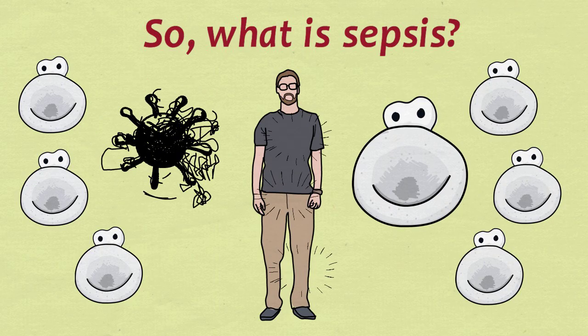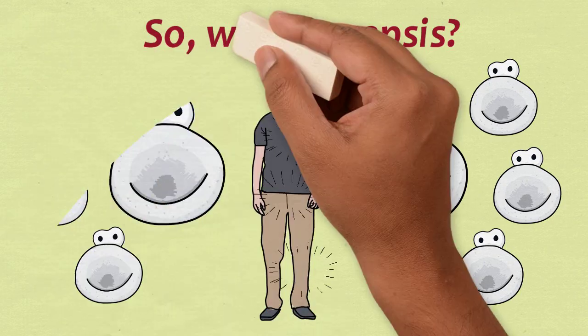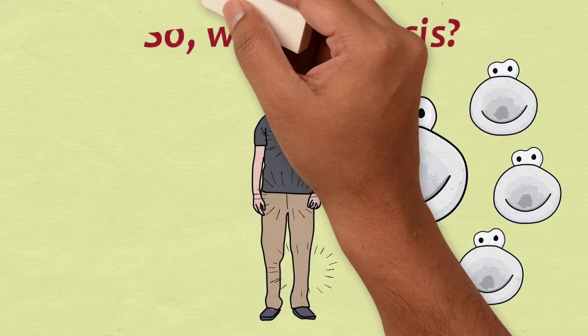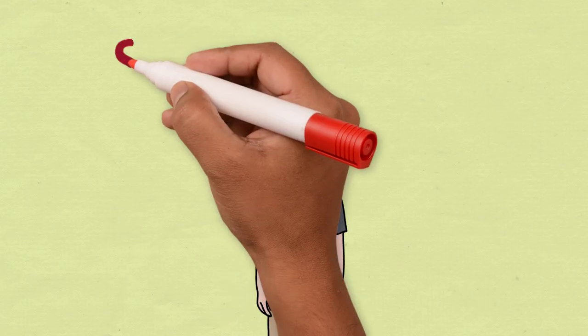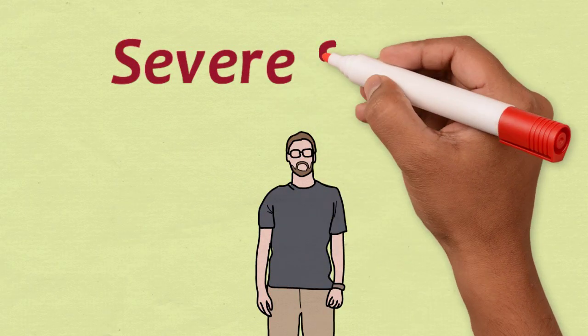Systemic inflammation interferes with the body's normal blood flow and may result in a drop in blood pressure. This makes it difficult for the blood to carry oxygen to the major organs and can quickly become life-threatening.